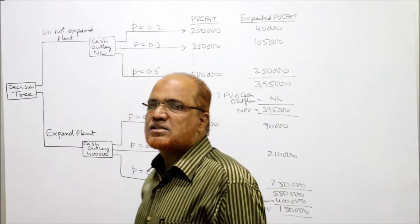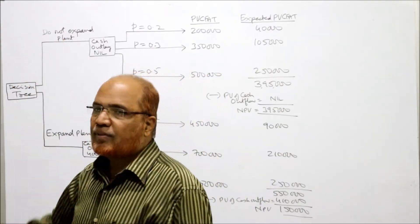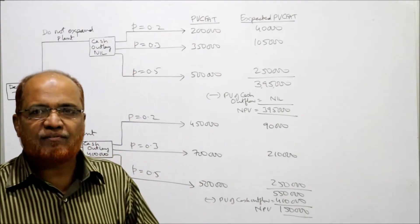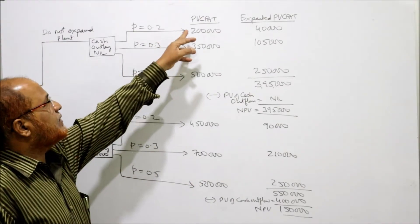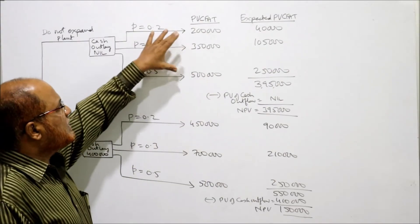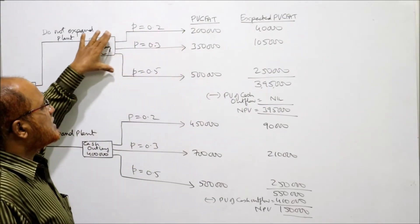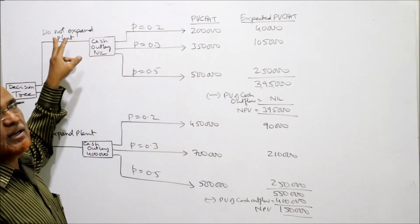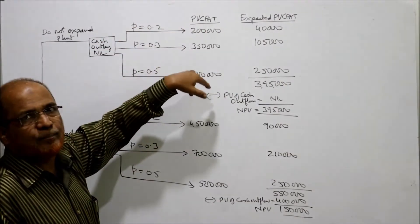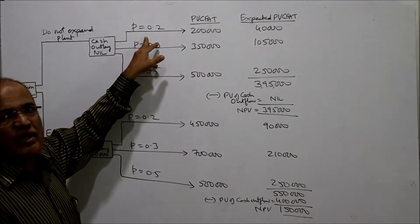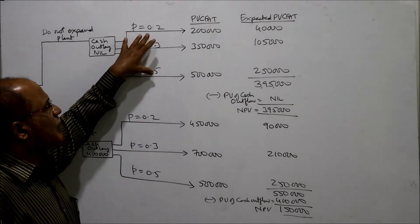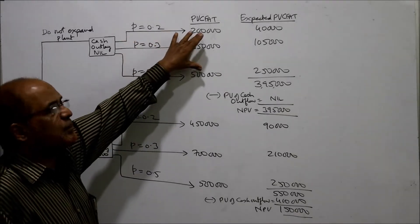Three consequences are given when we do not expand. When we do not expand, three PVCFATs are given: ₹2 lakh, ₹3 lakh 50,000, and ₹5 lakh. So these three branches come out from the alternative do not expand. For each branch we are given the probability: 0.2, 0.3, and 0.5.